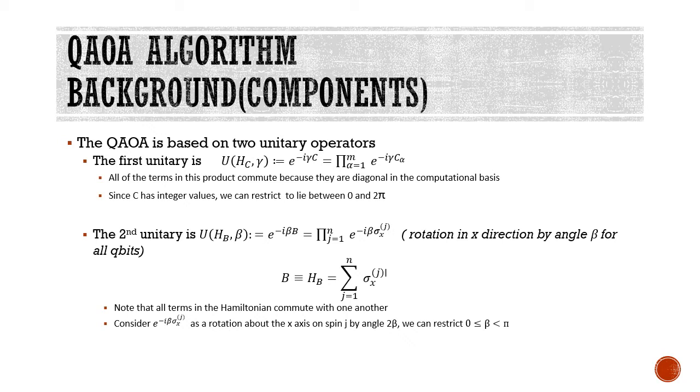Again in the second term, the terms commute and sigma_x is basically the Pauli x operator whose summation is given by the Hamiltonian H_beta. We can restrict beta to lie between 0 and π for a complete x-axis rotation. These things will make sense in the later course as we employ these unitary operators to construct the QAOA circuit.